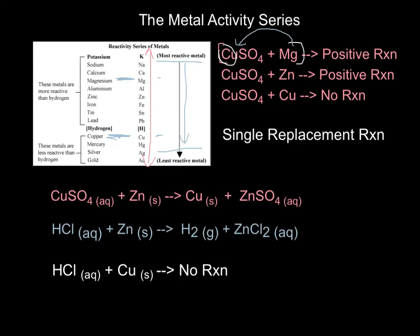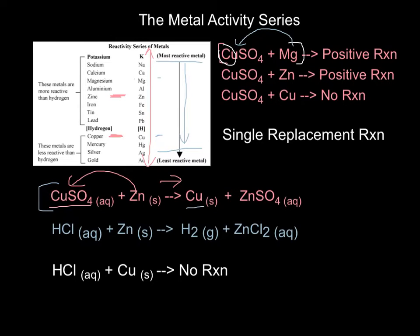This is called a single replacement reaction. Here's an example with copper sulfate and zinc. First, we find them on the chart: copper is here, and zinc is right here — above copper. Zinc is more reactive than copper, meaning it's higher on the Metal Activity Series. Thus, it's going to replace copper in this single replacement reaction. It kicks copper out of the union, and as a result, in our products we have copper as a single metal, and zinc is now with the sulfate — it's taken copper's spot.